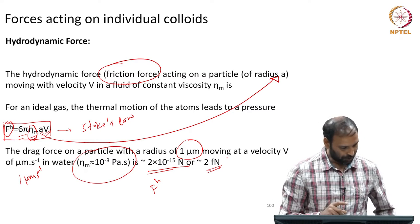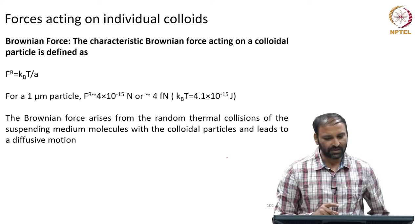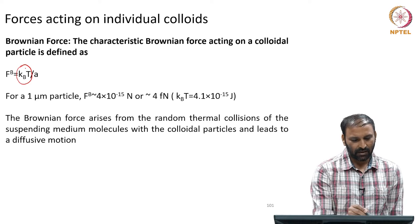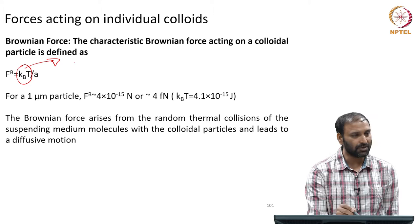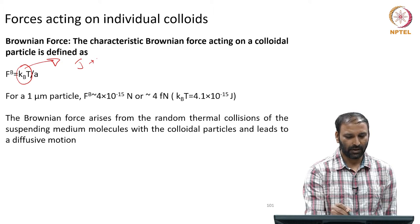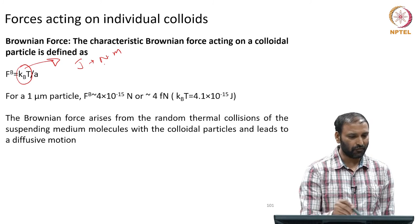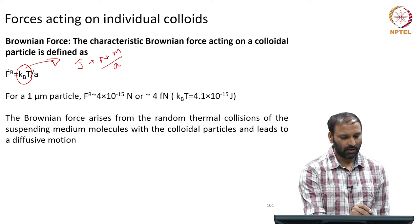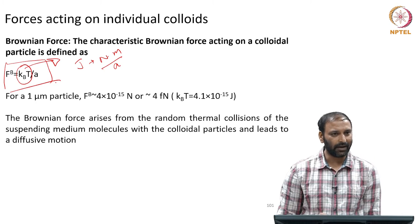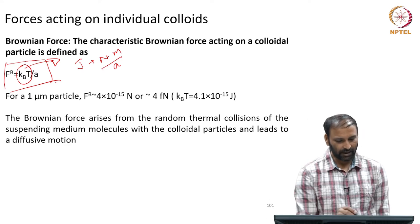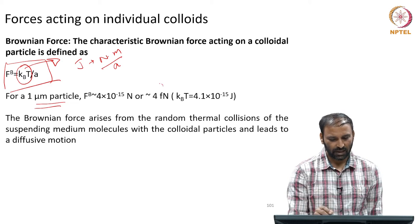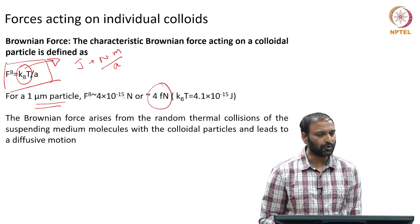The second force is the Brownian force. The thermal energy kBT has units of joules, which is newton·meter. To convert it into force, we need a length scale — using the size of the particle a — so the Brownian force is given by kBT divided by a. For a 1 micrometer particle, this Brownian force is of the order of 4 femtonewtons.